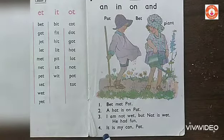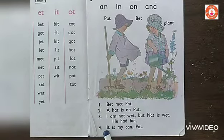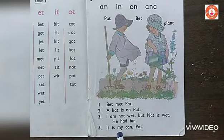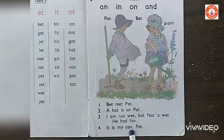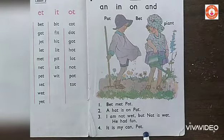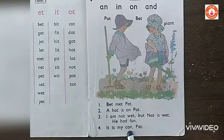Number four. It — when the sentence begins, the beginning letter is always capital. See, everywhere at the beginning there are capital letters. Okay? It is my can — comma — that means there are more words to complete the sentence. It is my can. Of bat. Full stop. That means the sentence gets over. It is my can, Pat.